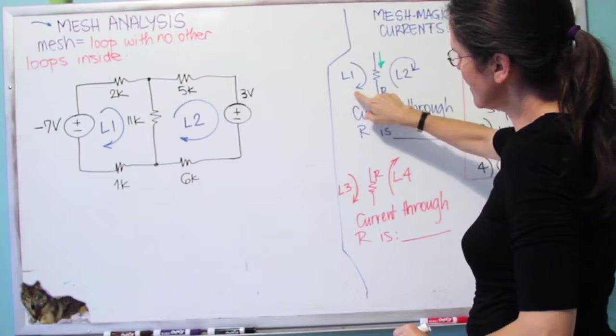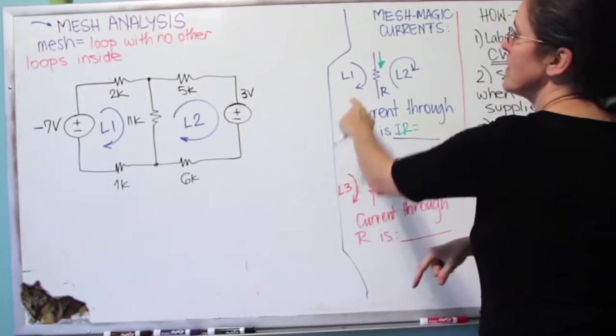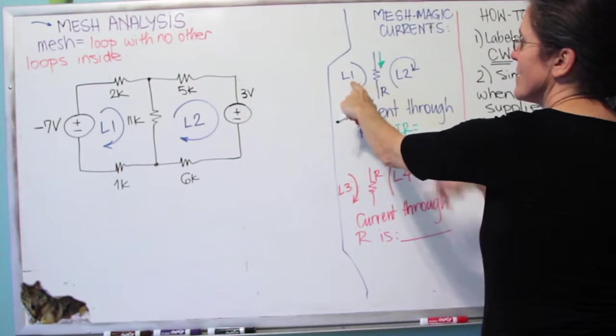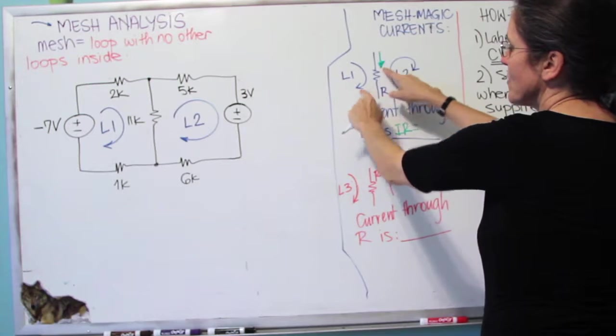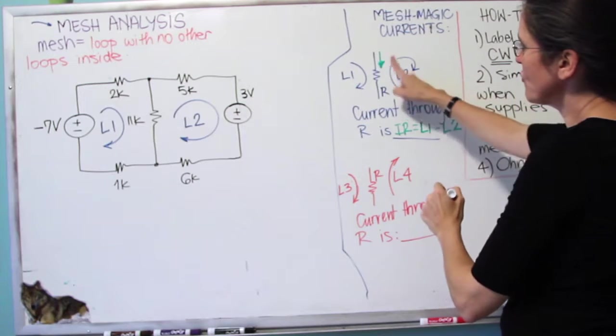This current here through the resistor is going to be IR. You can find it easily by subtracting the current that's in the same direction as this one, L1, minus L2.